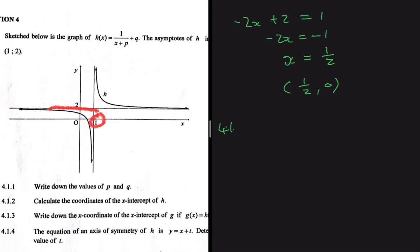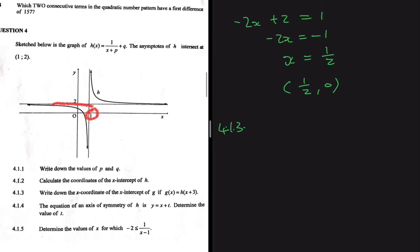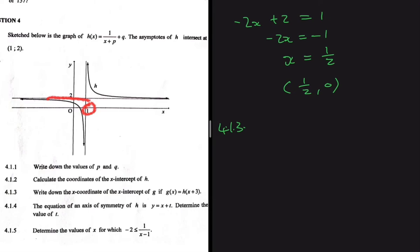For 4.1.3, we need the x-coordinate of the x-intercept of g, where g(x) = h(x + 3). g(x) is moving h(x) three units to the left — when we have plus 3 inside the argument we move three units to the left, and minus would move three units to the right. It's counterintuitive, but that's how it works.